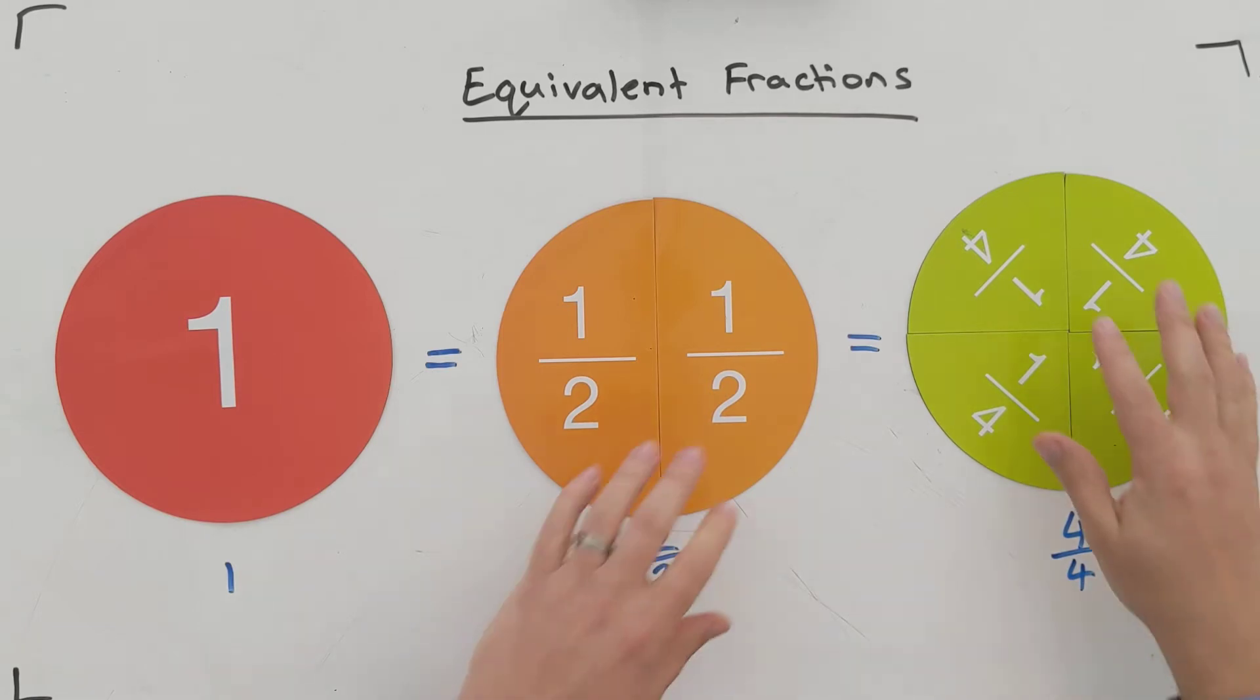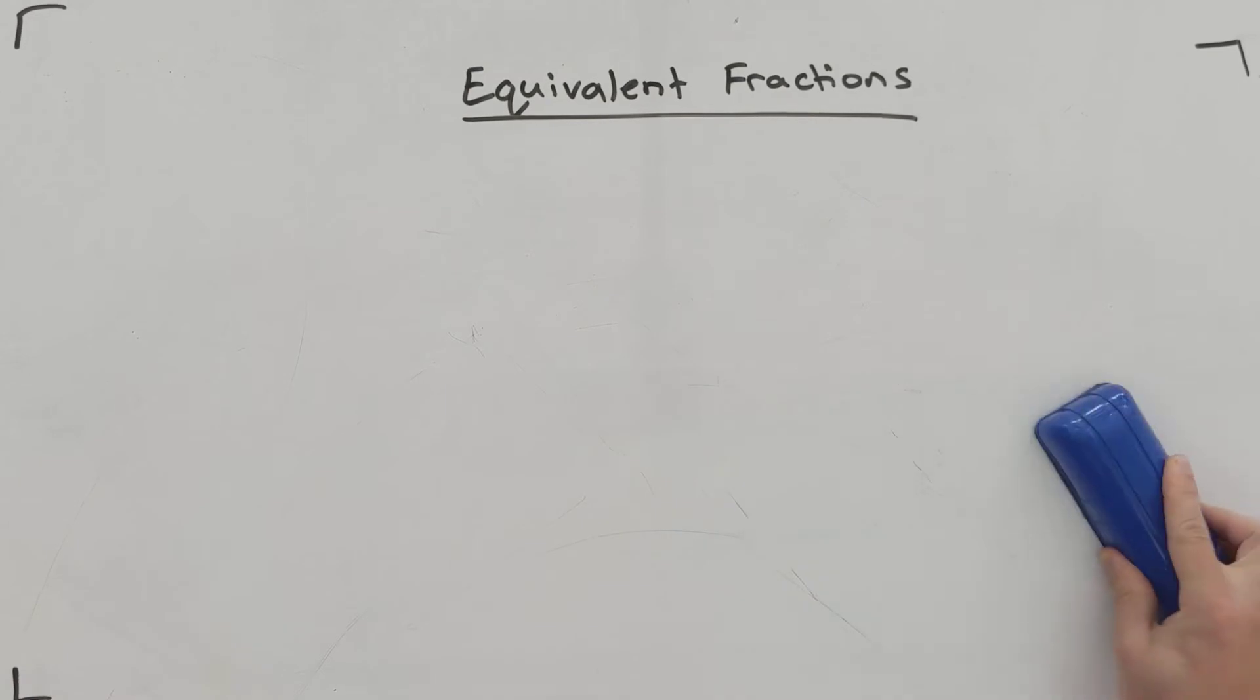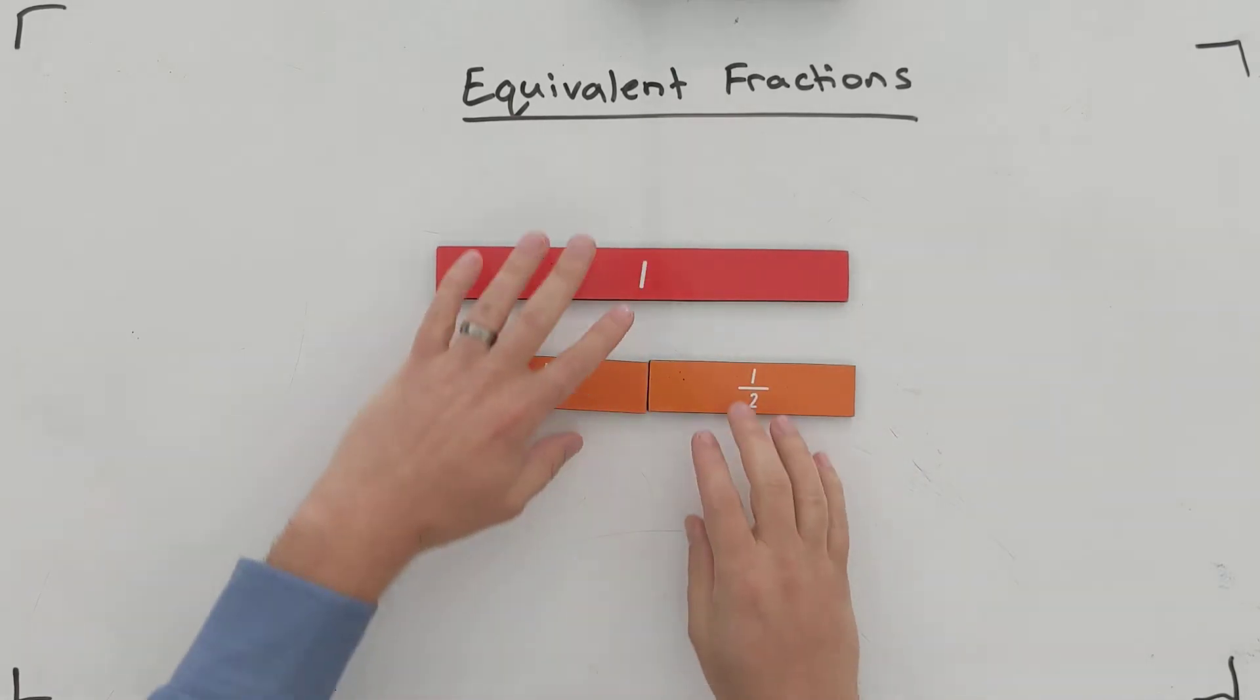Let's talk about a few more examples, get them out of the way. Alright, so we've got our bar here. We know that one whole is the same as two halves. Well, that's equivalent isn't it, that's equal. One and the two halves are the same.